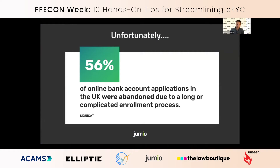Unfortunately, what that happy path looks like is not so much the case in practice. 56% of online bank account applications in the UK were abandoned due to a long or complicated enrollment process. There's a slide we use at Jumio which showcases financial institutions where it can be up to 13 or 14 steps of various data being captured, different documents, not being prepared for what is coming next, not educating the customer. Compare that to the likes of Monzo who have streamlined this process to only three or four screens whilst also maintaining high rates of fraud prevention.